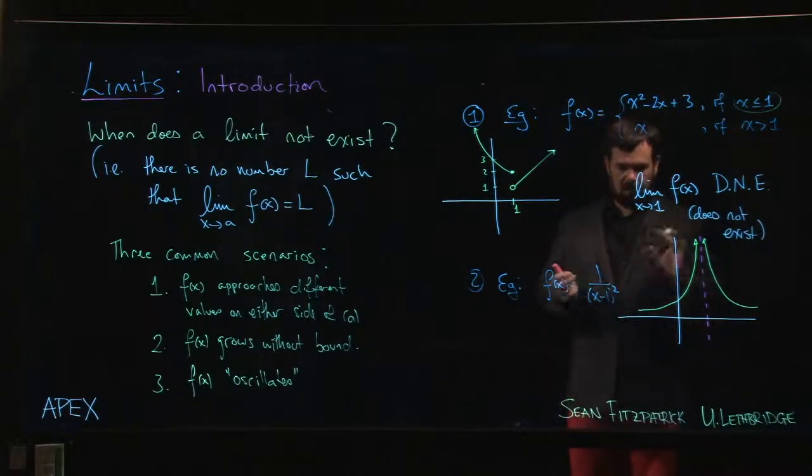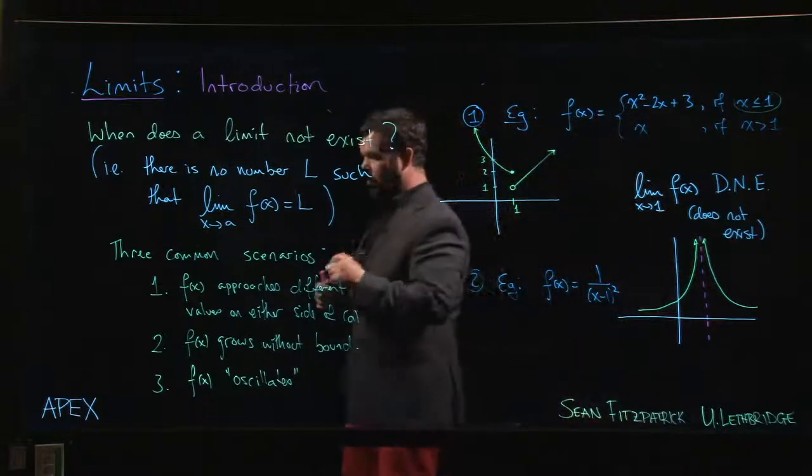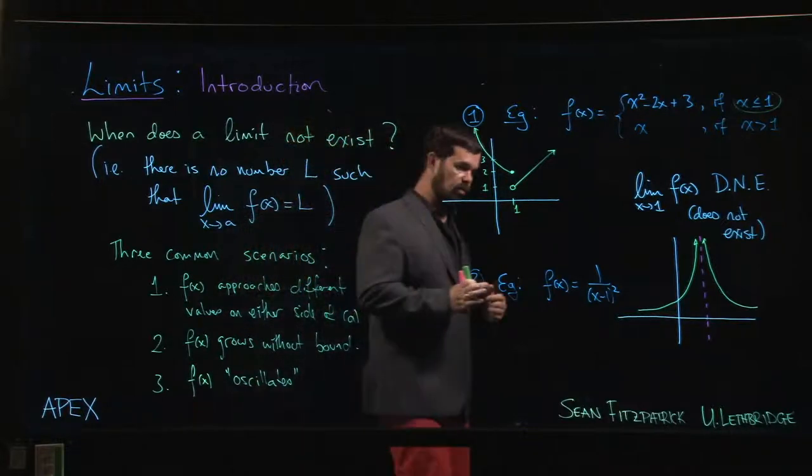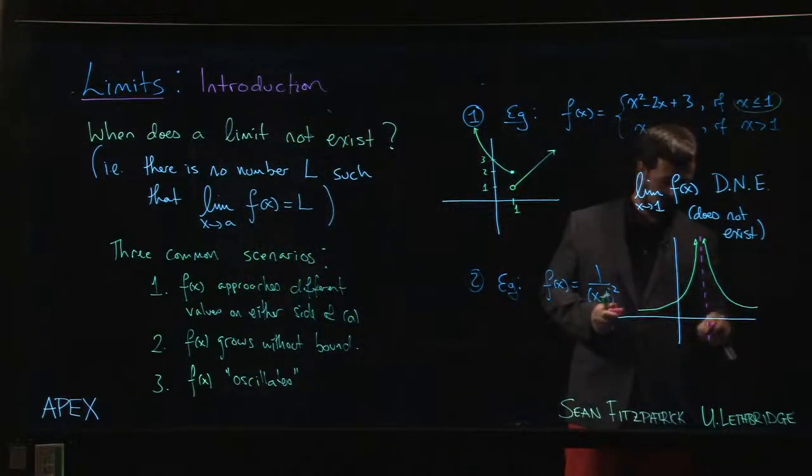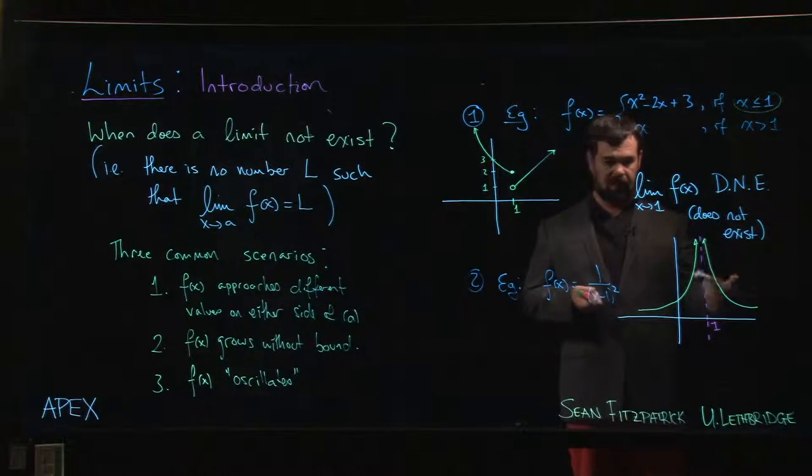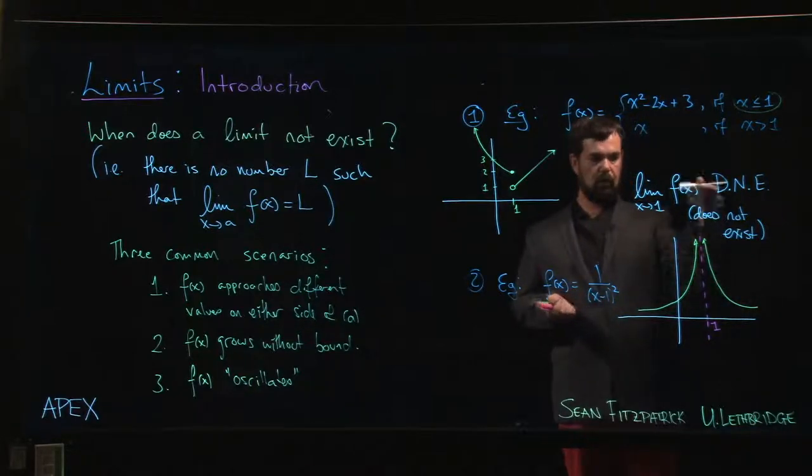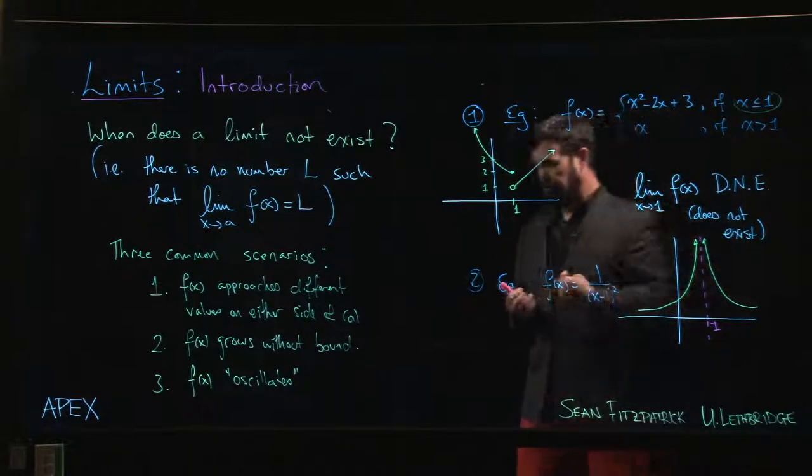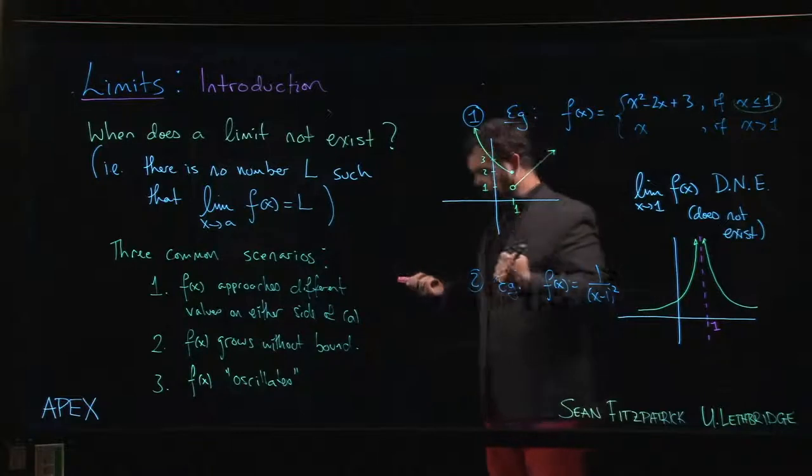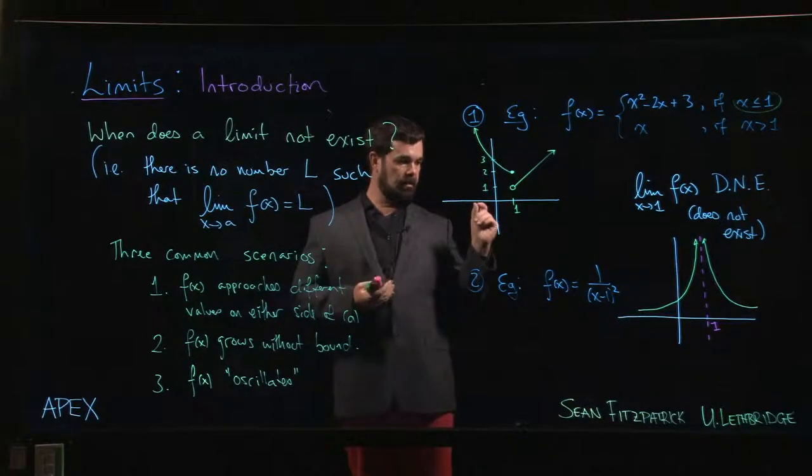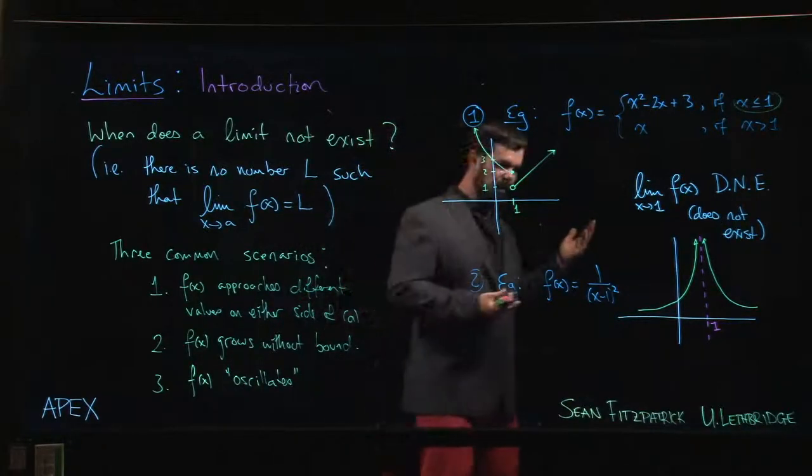And the reason it doesn't exist in this case is again, if I'm looking for a number L and I want to make f of x close to that number, and I want to consider values of x that are closer and closer and closer to in this case one—this is x equals one—well the closer I get to one, the bigger f of x gets. And it's this idea of it grows without bound. There's no upper limit on how big I can make f of x. The closer I get to one, the bigger f of x gets, so whatever L you choose, if I go a little bit closer to one, I'm going to be bigger than L. So you say oh let's choose an even bigger L, but then I go closer to one and again I'm bigger.